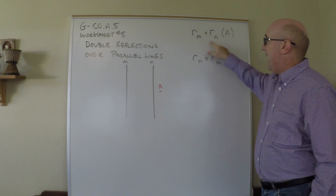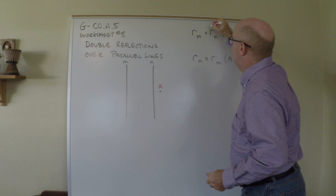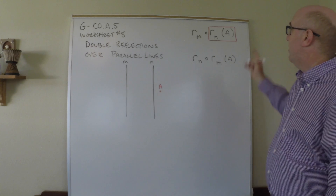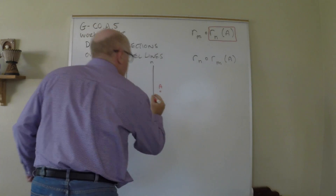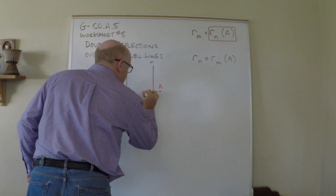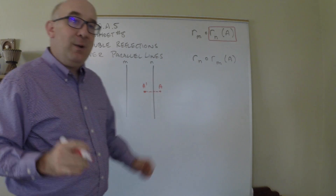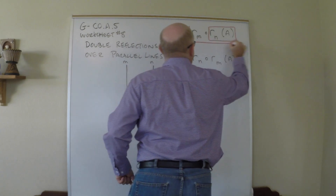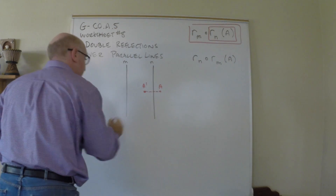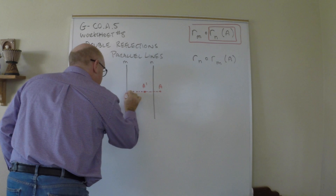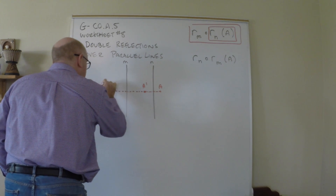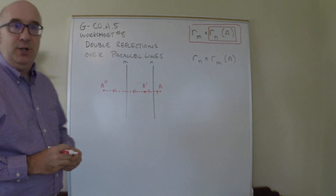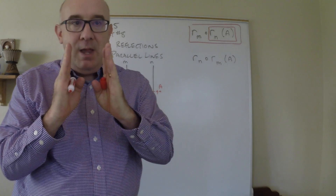Let's take a look at this particular one. This notation says reflect over n first — remember you work from the inside out. So we reflect over n first, giving us a prime here. Then we take that image and reflect it over m, moving it to this new location.